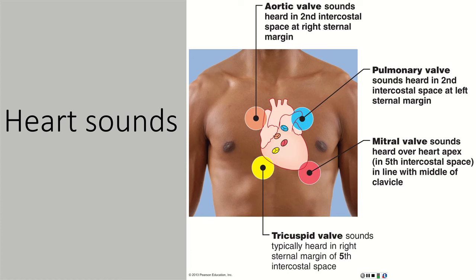In children, sometimes you'll hear a third heart sound, but we won't really talk about that since we're more concerned with the average healthy adult. Just know two heart sounds: the first is closure of the AV valves, the second is closure of the semilunar valves. When you get into your programs and are practicing, you'll be able to move the stethoscope around to listen to each individual valve, as shown in this image, but we're not going to worry about that in this class.